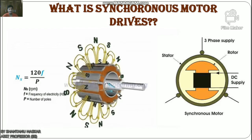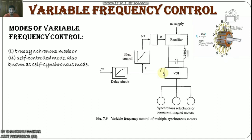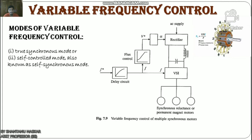Plugging is not used for synchronous motors as high plugging current can cause disturbance and damage. Now we will discuss the control methods. The first is variable frequency control. A drive operating in true variable frequency control of multiple synchronous motors is shown where frequency command f* is applied to a voltage source inverter through a delay circuit so that rotor speed is able to track the change in frequency. A flux control block changes the stator voltage with frequency to maintain constant flux below rated speed and constant terminal voltage above rated speed.